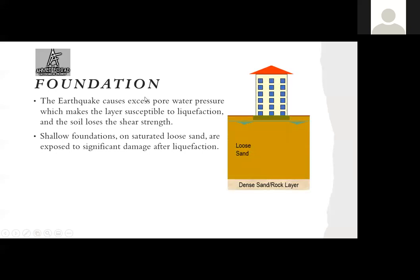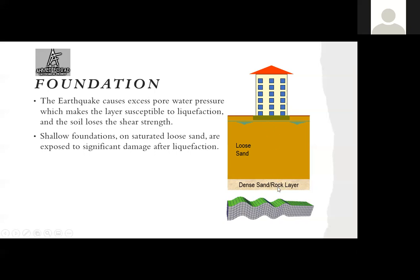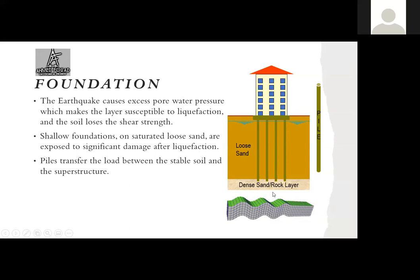If we have a building located on top of ground with a water level within a loose sand layer, during the earthquake the water starts to propagate and the structure will settle. The main solution is transferring the load from the weak layer to the strong layer. We can do this through piles — by transferring the pile load to the strong layer, we can mitigate some of the problems of liquefaction.